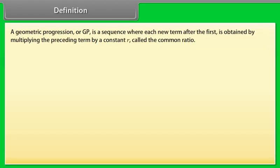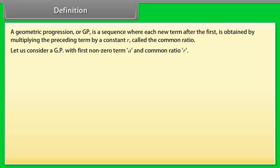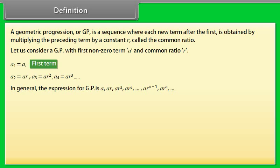A geometric progression or GP is a sequence where each new term after the first is obtained by multiplying the preceding term by a constant R, called the common ratio. Let us consider a GP with first non-zero term A and common ratio R. A1 = A, A2 = A×R, A3 = A×R², A4 = A×R³, and so on. In general, the expression for GP is: A, A×R, A×R², A×R³, up to A×R^(n-1), A×R^n, and so on.